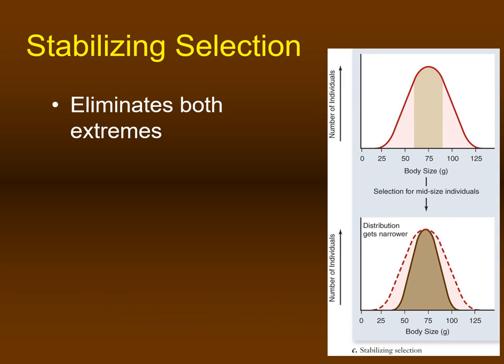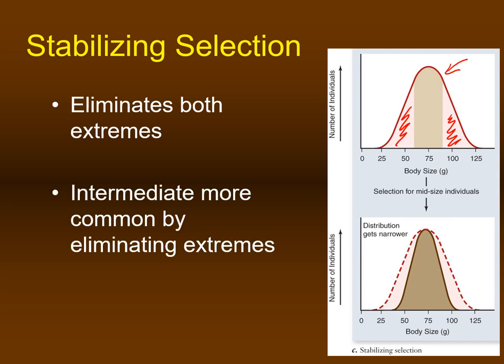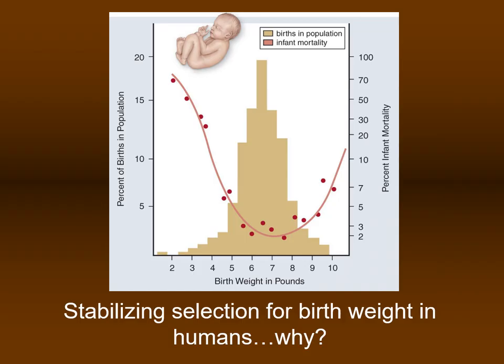In stabilizing selection, extremes are eliminated and the intermediate phenotype is favored. For example, this occurs with the birth weight of human babies — lower birth weight is associated with greater infant mortality, while extremely large birth weight is associated with complications during birth. Therefore, the intermediate baby size is selected for.